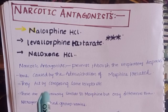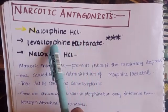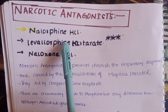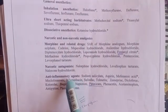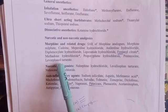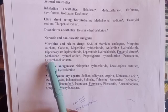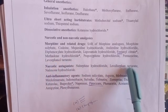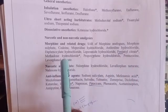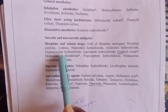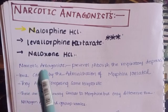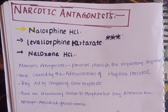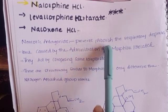The narcotic antagonist is called Nalorphine Hydrochloride. You can confuse Levorphine — Levorphanol Tartrate is the agonist, and Nalorphine is the antagonist. Levorphanol Tartrate acts as the agonist while Nalorphine acts as the antagonist.